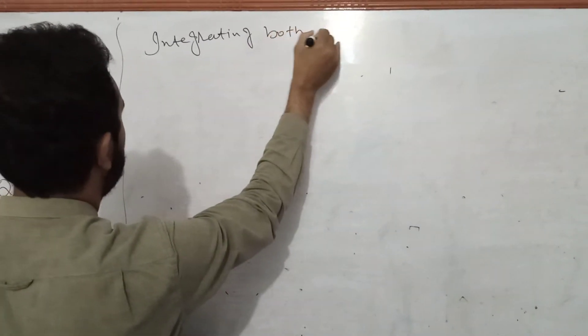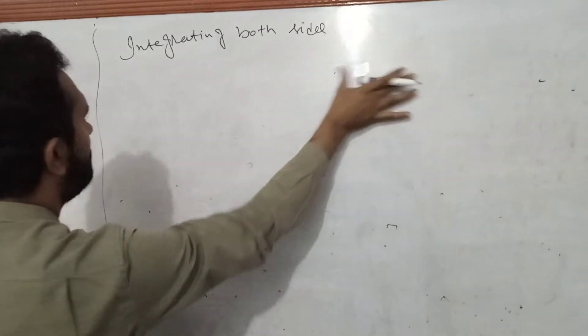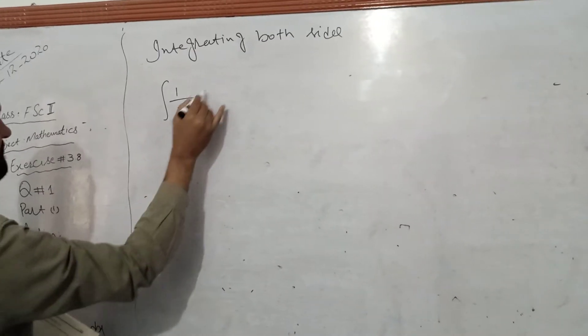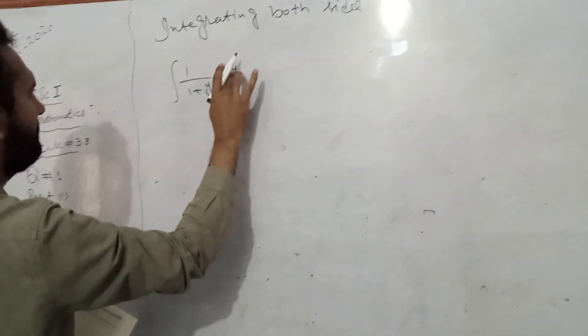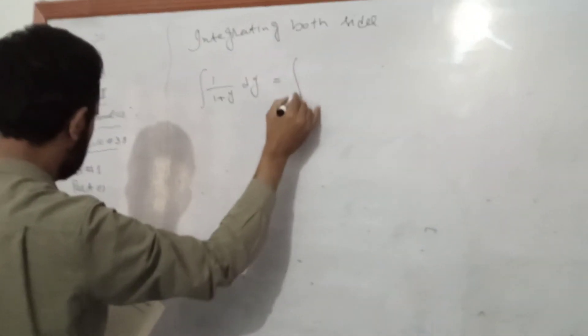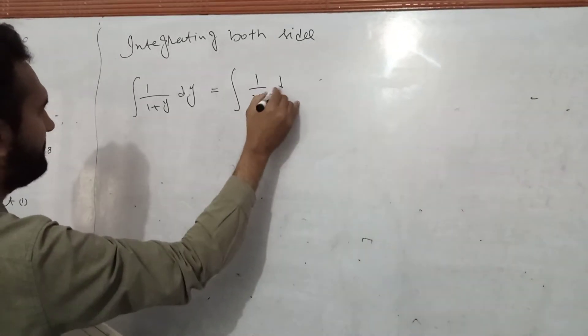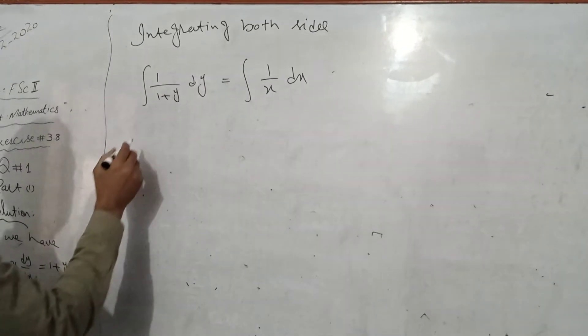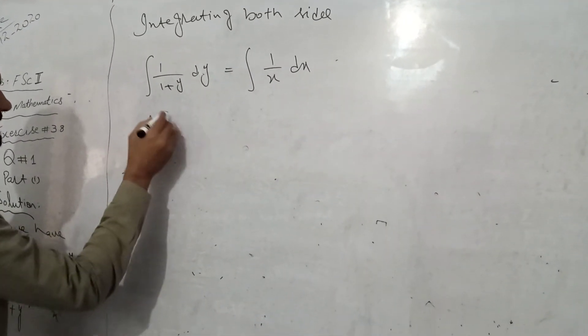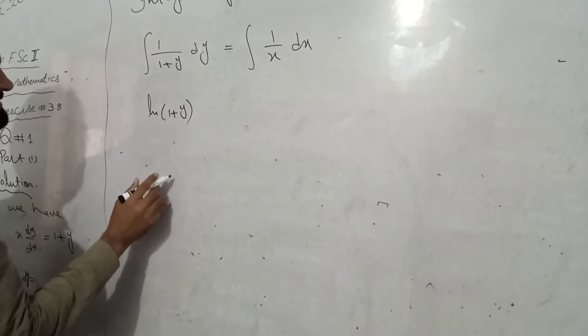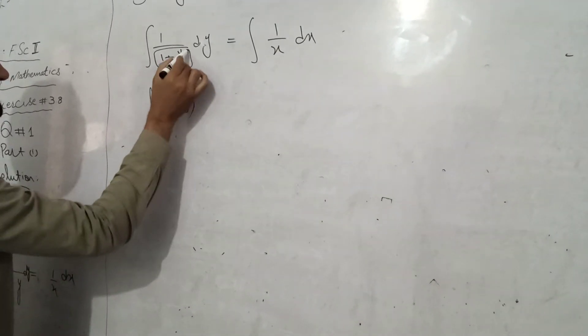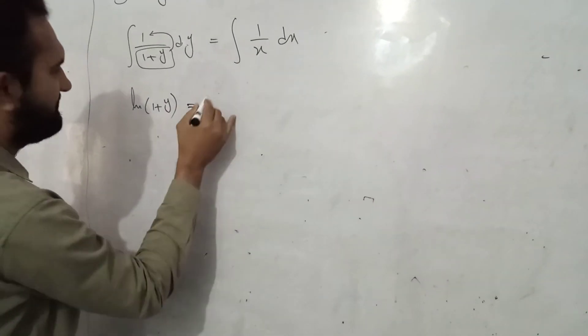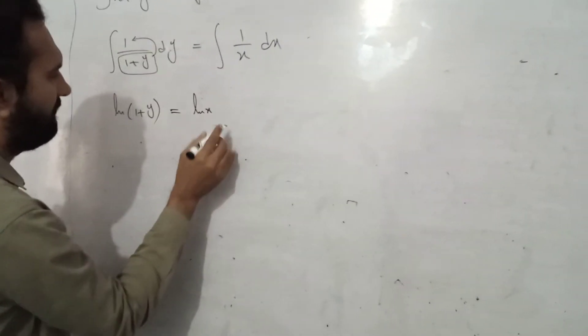Integrating both sides. So, y equals to 1 over 1 plus y equals to 1 over x into dx. So, y equals to 1 over x.